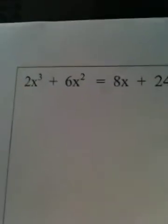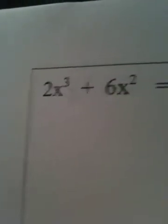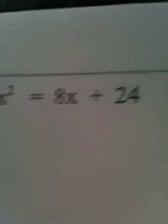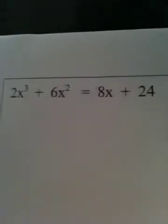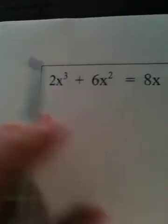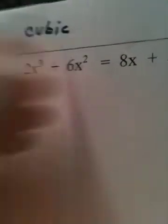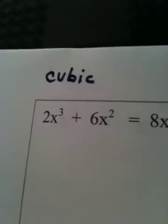Okay, ladies and gentlemen, here's the next problem in R5, Supplement A. 2x cubed plus 6x squared equals 8x plus 24. Now, the first thing we recognize in this equation is that it is degree 3. An equation of degree 3 is called a cubic equation.